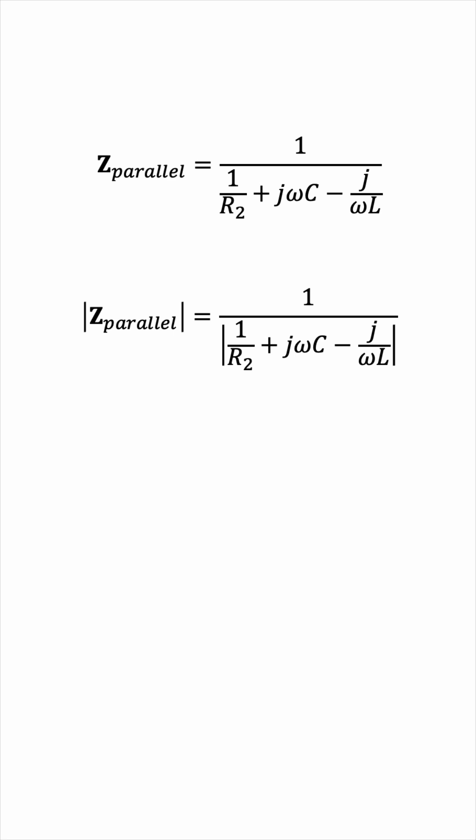Let's factor out a J to clearly see the real part and imaginary part. Remember, we want to maximize the magnitude of Z parallel, so we want to minimize this denominator magnitude. And this happens when the imaginary part is 0.